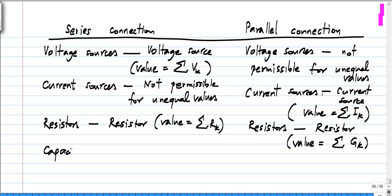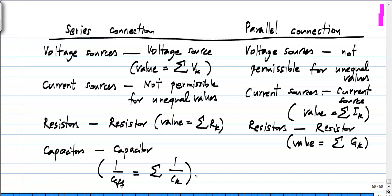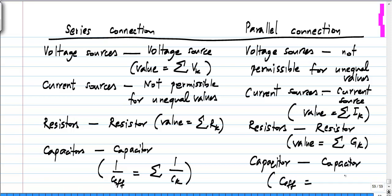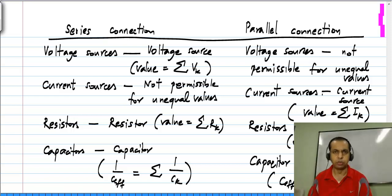If you take capacitors in series, the result is still a capacitor, and the reciprocal of the effective capacitance equals the sum of reciprocals of individual capacitances. Whereas for a parallel connection, the capacitor value is the sum of individual capacitances.